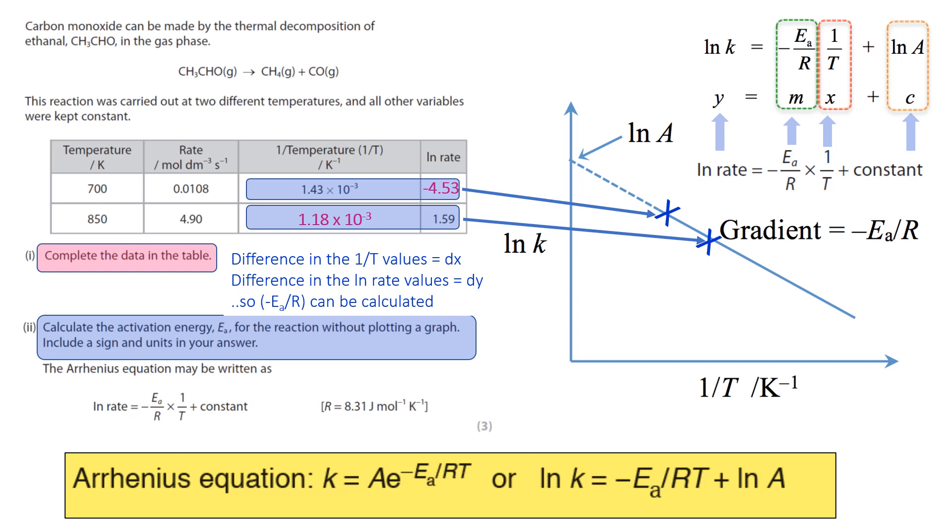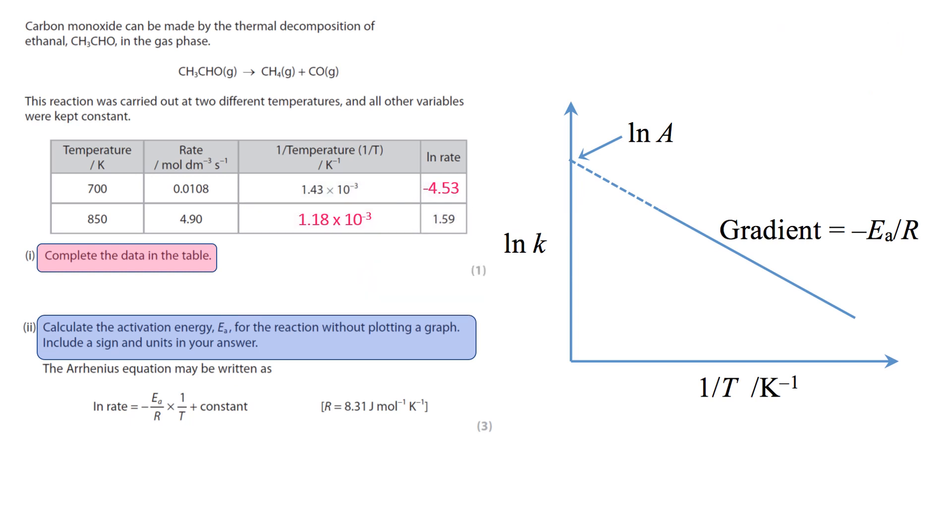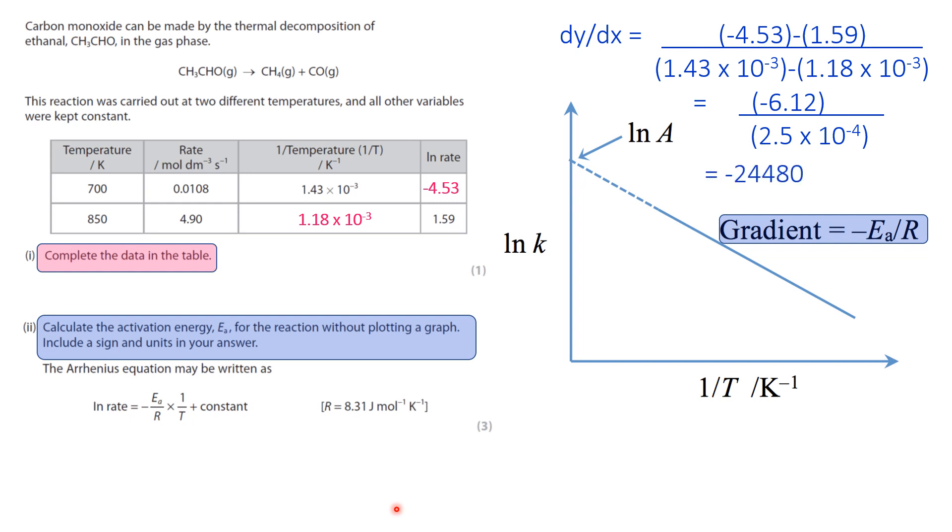So therefore, Ea over R can be calculated, or minus Ea over R. So if we put the numbers in, you subtract 1.59 from minus 4.53, which are these two here. And on the bottom of the expression, it's the difference between these two here. So that gives you minus 6.12 over 2.5 times 10 to the minus 4, which is 24,480.